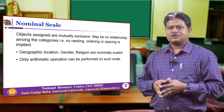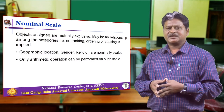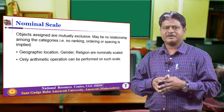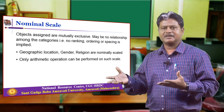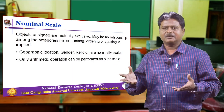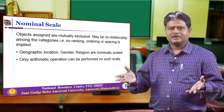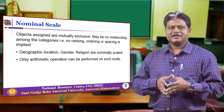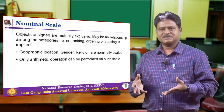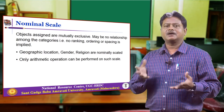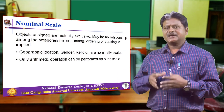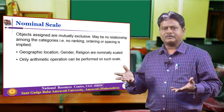In the nominal scale, objects are assigned to mutually exclusive categories. There is no relationship among the categories — that is, no ranking, ordering, or spacing is implied. For example, data related to geographic location, gender, and religion are generally nominally scaled. In this scale, only basic arithmetic operations can be performed.